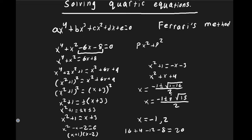We've confirmed our solutions. Note that multiplying the two resulting quadratics should recover the original quartic. We were lucky this quartic gave perfect squares on both sides, but not all quartics factor so easily. With that in mind, we'll now look at a second, more involved example.